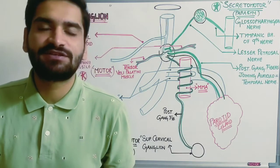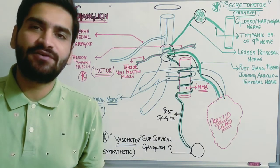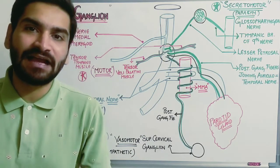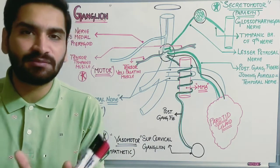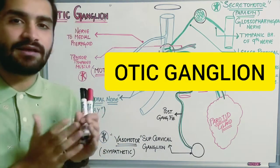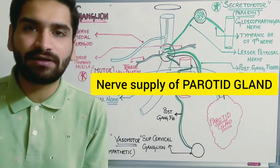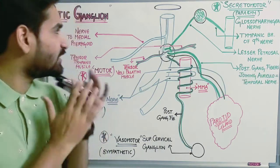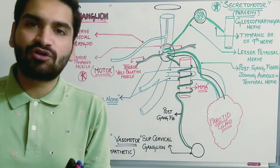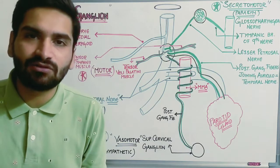Hi everyone, welcome back to our channel 'Dentistry to the Point.' This is Dr. Romil. In our previous video on general anatomy, we discussed the mandibular nerve. Now there is a ganglion in relation to the mandibular nerve which we are going to study today — that is the otic ganglion. We are also going to study the nerve supply of the parotid gland, because studying the otic ganglion and studying the nerve supply of the parotid gland is one and the same.